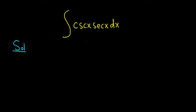So when you first see this problem, you probably think, is there a u substitution? I wasn't able to find one. If you let u be secant, then the derivative is secant tangent, so that doesn't work. If you let u be cosecant, the derivative is negative cosecant cotangent, and that doesn't seem to work either.